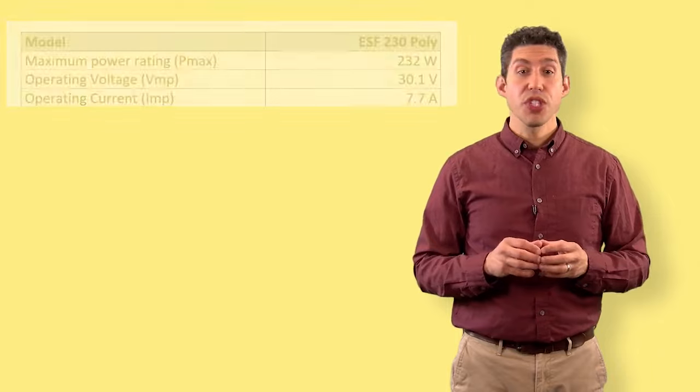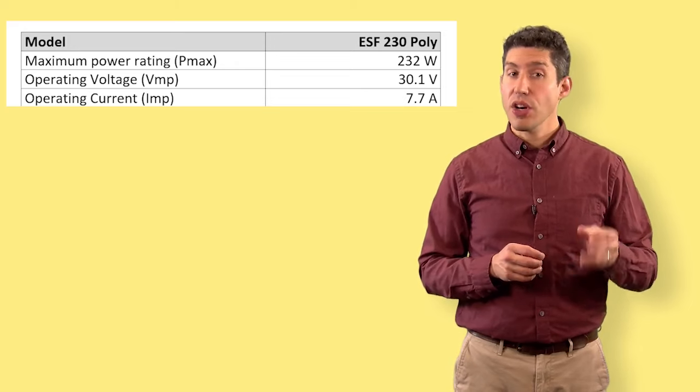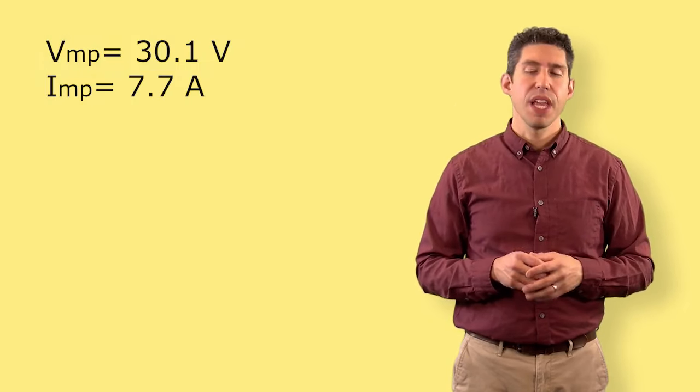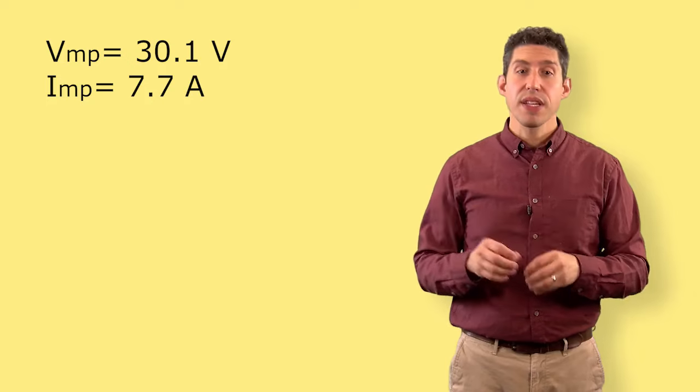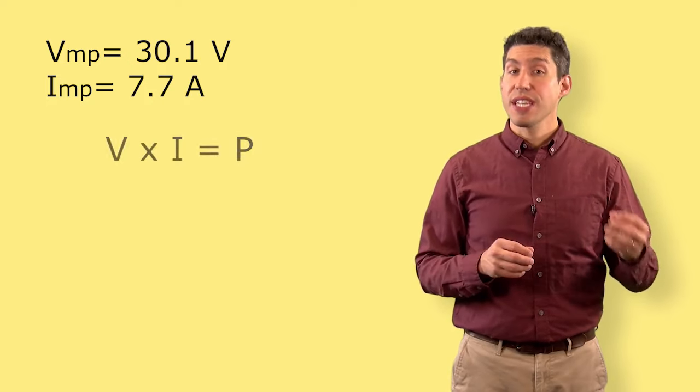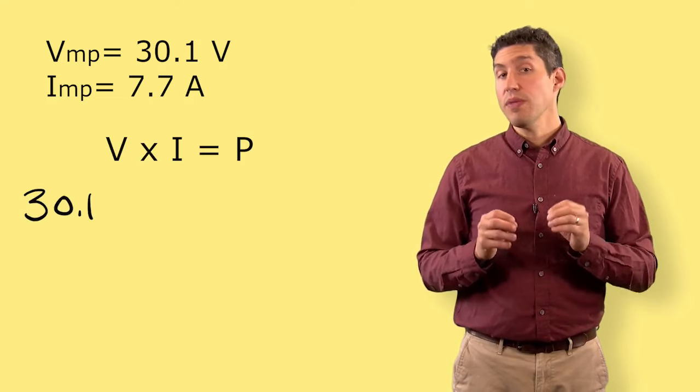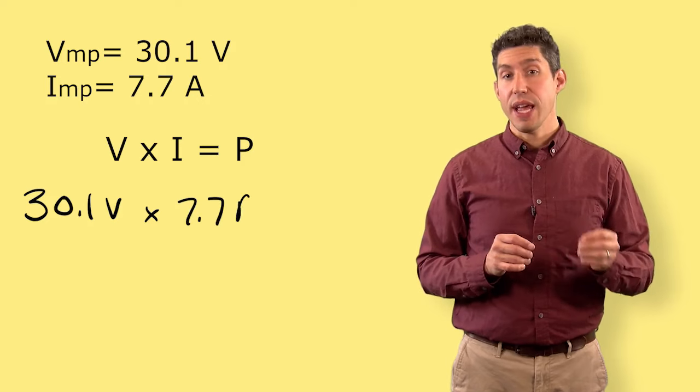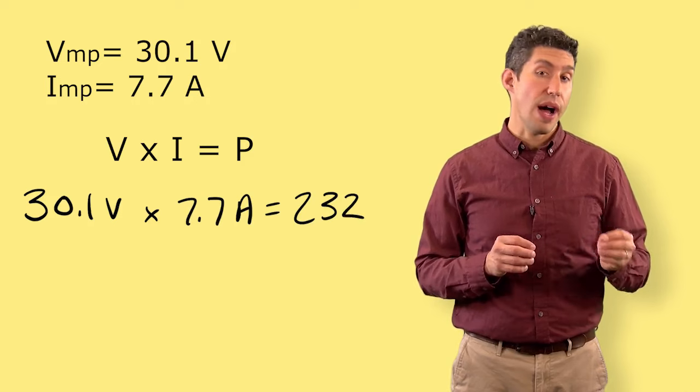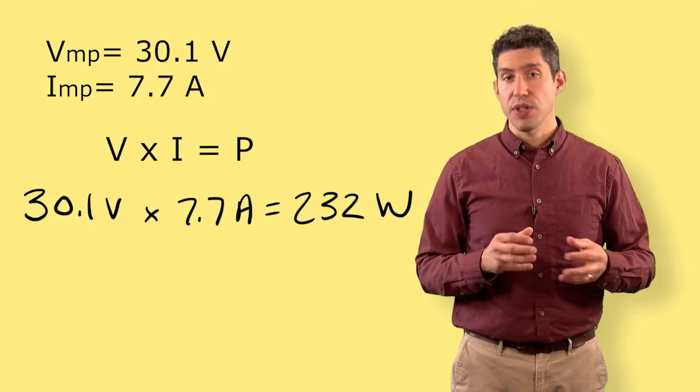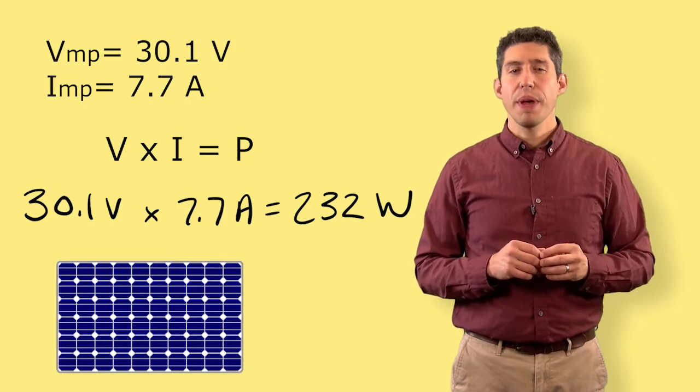I've taken some voltage and current values from a specification sheet. The voltage at maximum power, VMP, and the current at maximum power, IMP. If we want to calculate the maximum power, which is in the units of watts, it's going to be equal to the voltage times the current. So, 30.1 volts multiplied by 7.7 amps is equal to 232 watts, rounding up to the nearest watt. That would be the output wattage of this individual panel, but that needs to be adjusted for standard test conditions.